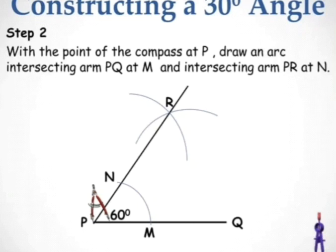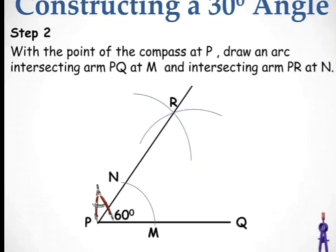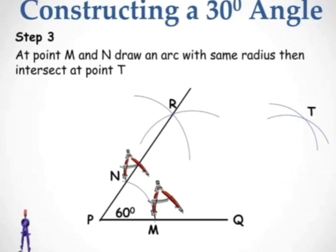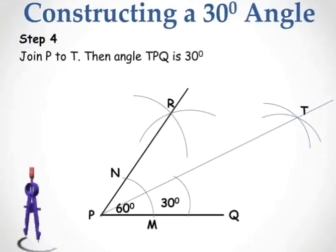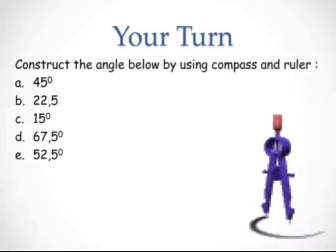At points M and N, draw an arc with the same radius — they intersect at point T. Join P to T, then angle TPQ is 30 degrees. This is the required angle. Students, the following angles to consider constructing using compass and ruler are: 45 degrees, 22.5 degrees, 15 degrees, 67.5 degrees, and 52.5 degrees.